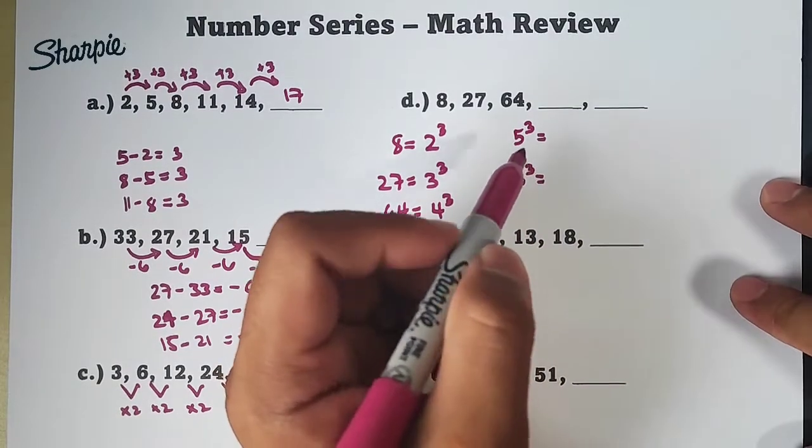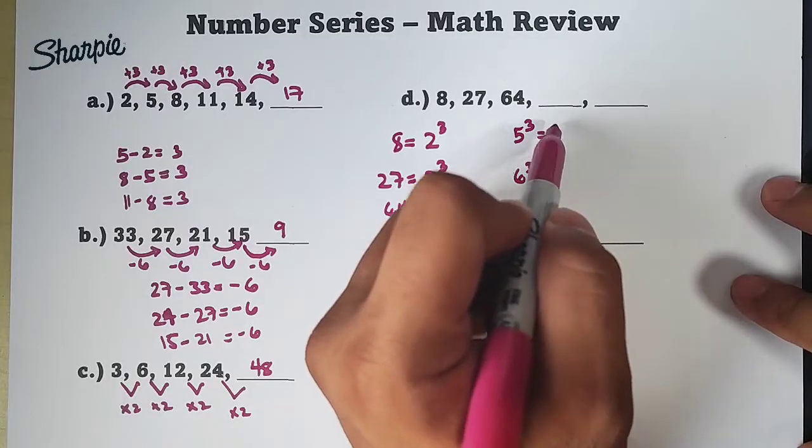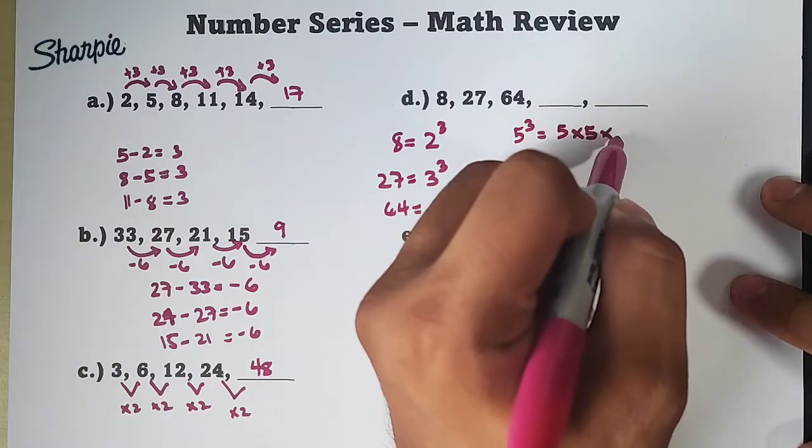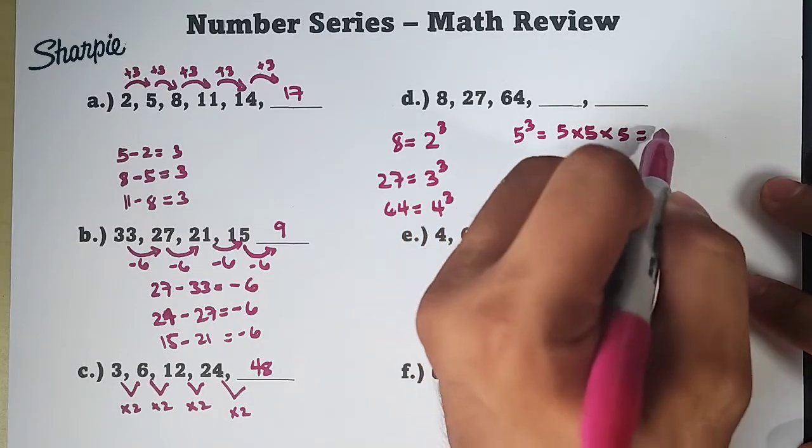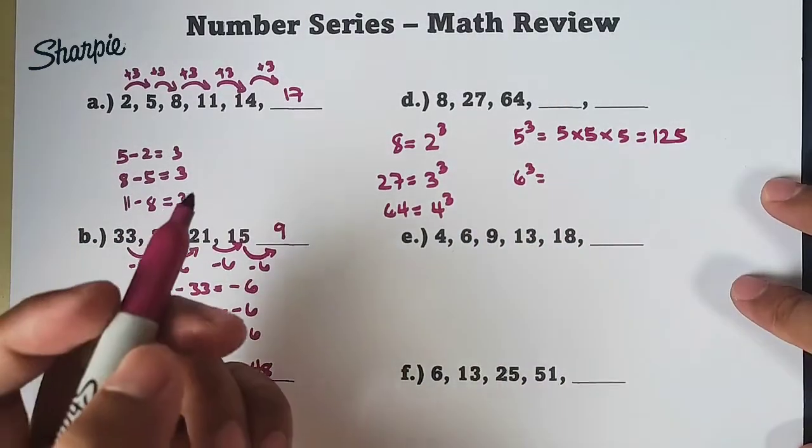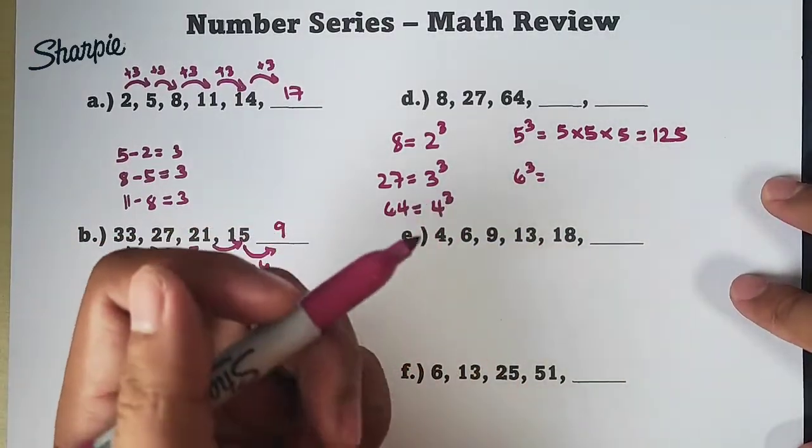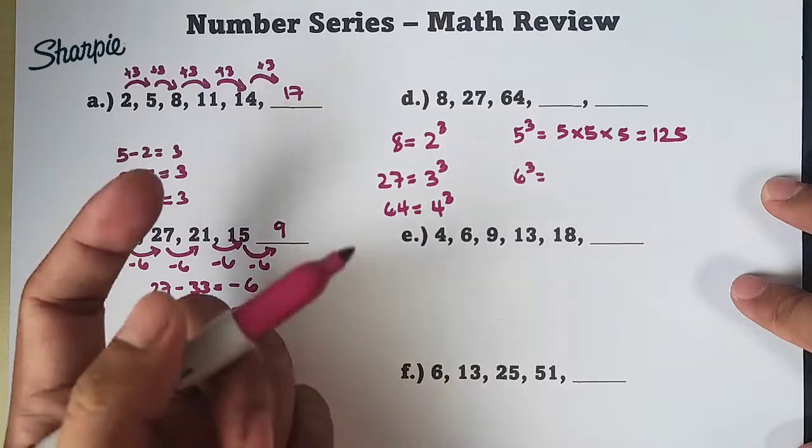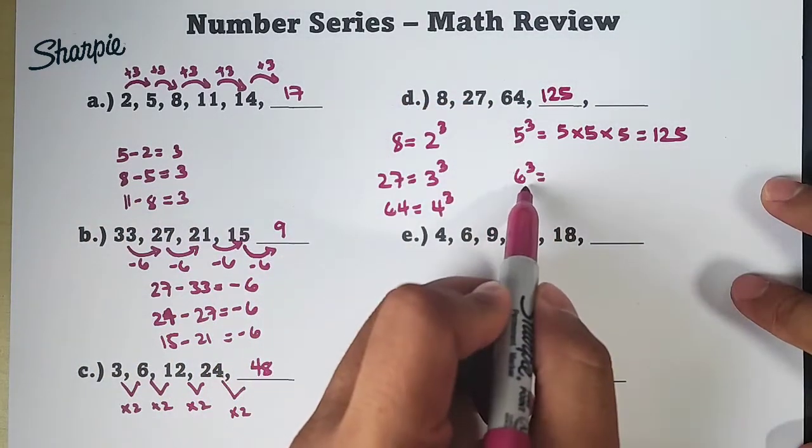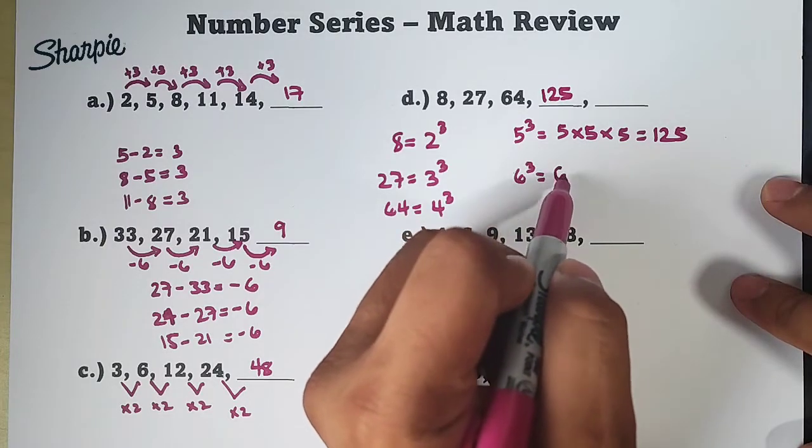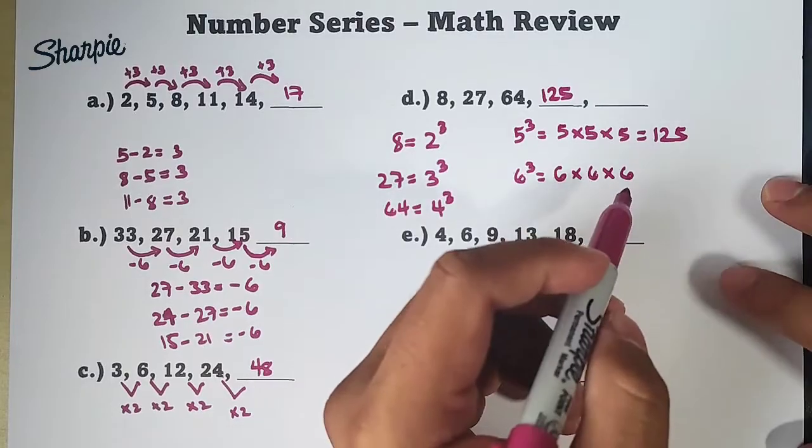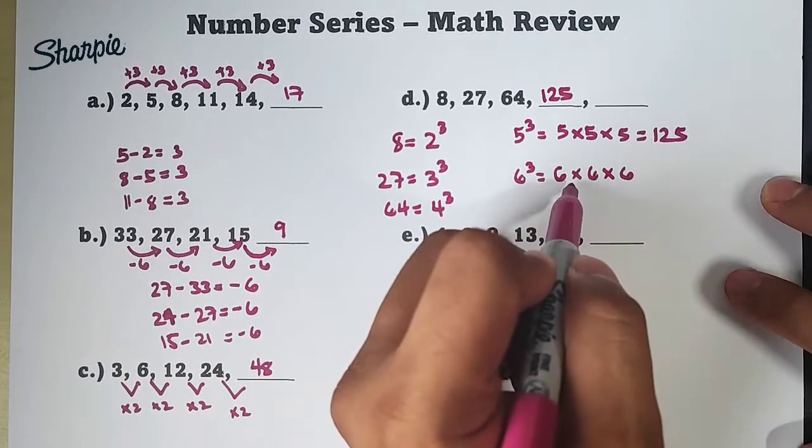So, anong po bang ibig sabihin ng 5 cube? Ang ibig sabihin, guys, ng 5 cube ay 3 times mo i-multiply si 5. That is 5 times 5 times 5, and the answer is 125. So, importante rin na kabisado nyo yung perfect cube numbers kahit at least 5 lang o kaya 10. So, this is 125.